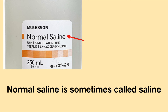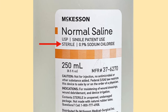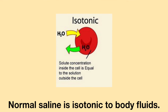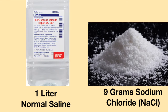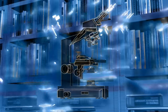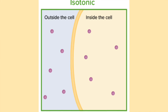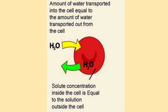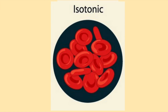Normal saline is also sometimes called saline or 0.9% sodium chloride. It is a sterile solution composed of 0.9% sodium chloride in sterile water. It is isotonic to that of body fluids, which means its concentration is similar to that of body fluids. Each liter of normal saline contains approximately 9 grams of sodium chloride. When a solution is isotonic, the saline concentration inside and outside the cell is the same or nearly identical, and water passes back and forth at the same rate, so the cell size remains the same.